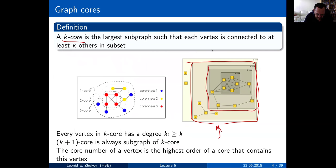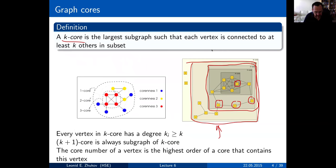The two-core is this group of nodes — a subgraph where every vertex is connected to at least two nodes within the same subgraph. Some nodes have degree two, others have higher degree but are also inside. What's important is that we're talking about connection to nodes inside the subset — not connections outside it.